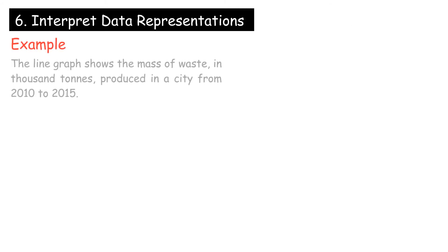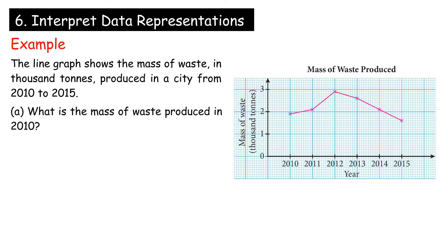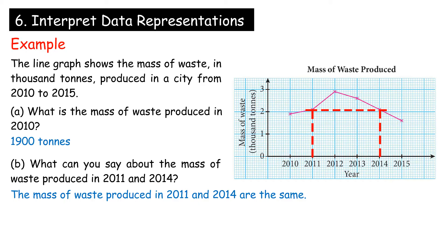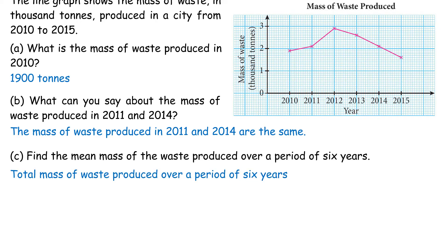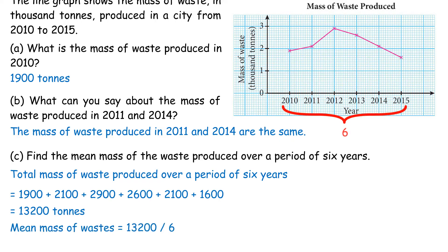Interpret Data Representations: A line graph shows the mass of waste, in 1,000 tons, produced in a city from 2010 to 2015. A. Mass of waste in 2010: 1,900 tons. B. The mass of waste produced in 2011 and 2014 are the same. C. Mean mass over 6 years: total = 1,900 + 2,100 + 2,900 + 2,600 + 2,100 + 1,600 = 13,200 tons; mean = 13,200 ÷ 6 = 2,200 tons.